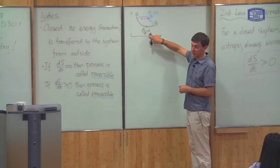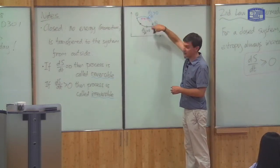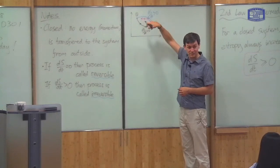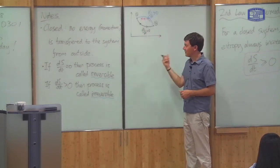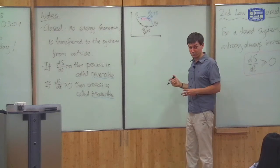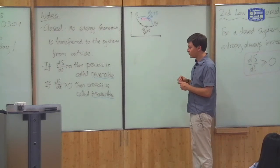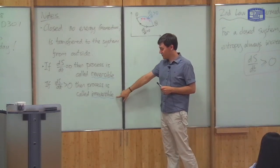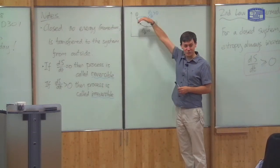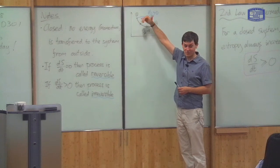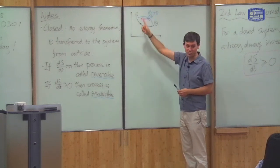But if the change in entropy is zero, then I can go both ways — I can go this way and I can go back — because in both cases the change in entropy is zero, which satisfies the second law. So processes are called irreversible because you can't undo them: you can go this way but can't go back. In a reversible process, you can go both ways.